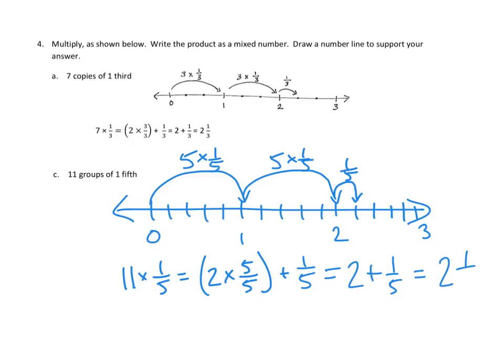And that means that we're going to have the same as 2 plus 1 fifth, or we can just say 2 and 1 fifth. So it looks like by doing all these hops, 11 of these hops, 1, 2, 3, 4, 5, 6, 7, 8, 9, 10, and 11, it looks like we've gotten to 2 and 1 fifth. And that looks like the right thing from our diagram: 1, 2 wholes, and 1 fifth.